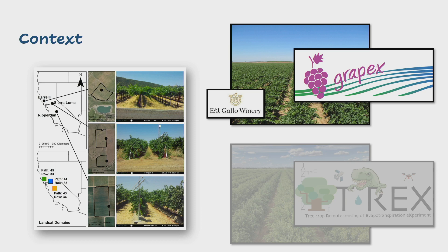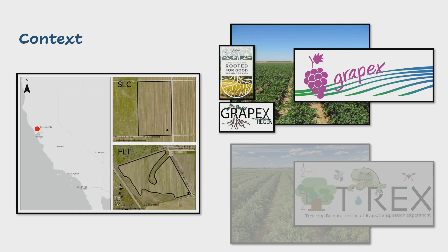GRAPEX started with a collaboration with E&J Gallo Winery, the world's largest family-owned winery. We had vineyards located up in Sonoma County, down through the Central Valley at our Sierra Loma site just south of Sacramento, and all the way down to our Ripperdan site in Fresno, California. We've recently expanded the GRAPEX network to include regenerative vineyards located near Santa Rosa in Northern California, in partnership with Jackson Family Wines, who have an initiative to transition all of their roughly 30,000 acres to regenerative by 2030.